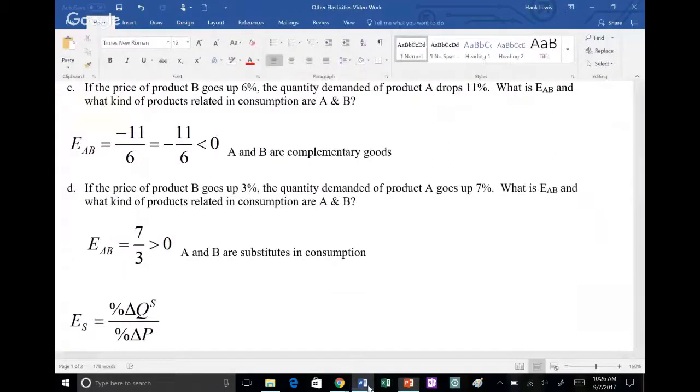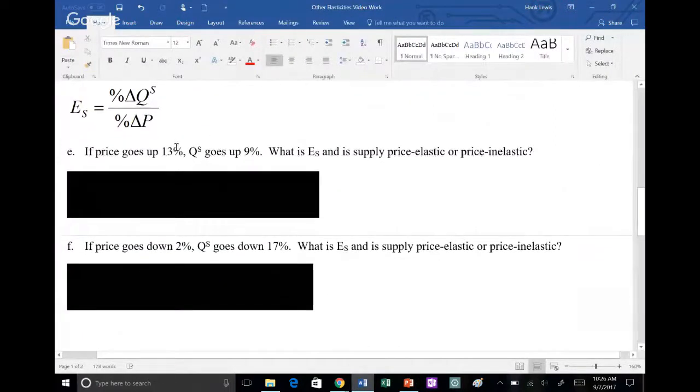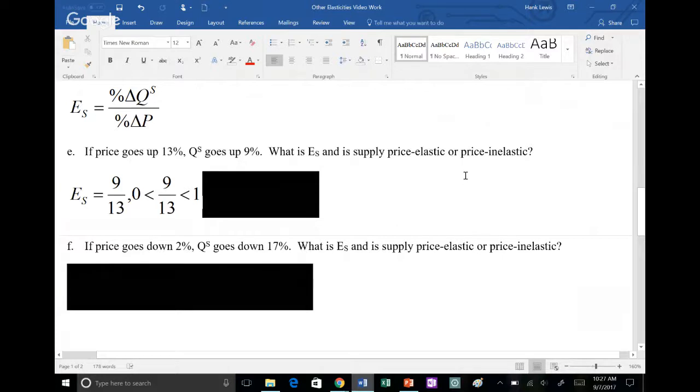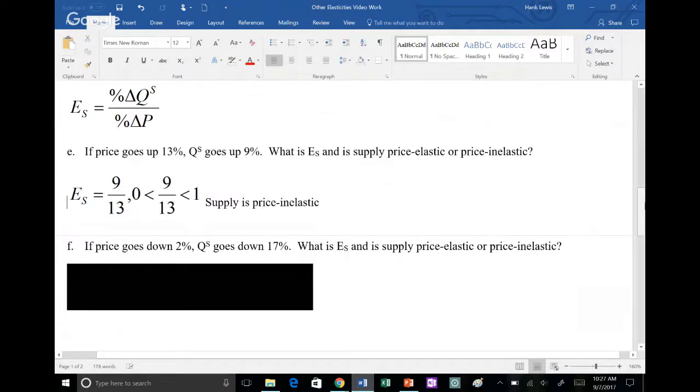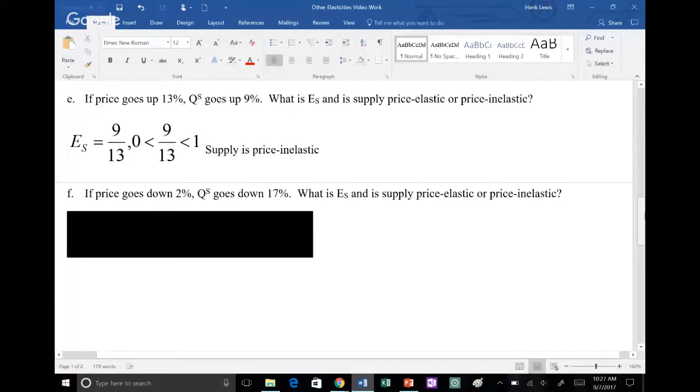Let's go back to our example. Price goes up 13%, so what kind of 13 goes where? Positive 13 in the denominator. Quantity supplied goes up 9%, so what goes where? Positive 9 in the numerator. E sub S is going to equal 9 over 13. If you have a fraction with a numerator lower than the denominator, that number is less than one but bigger than zero. E sub S between zero and one means supply is what kind of elastic with respect to price? Price inelastic. That means price changes by a bigger percentage than quantity. That's very similar to price elasticity of demand.